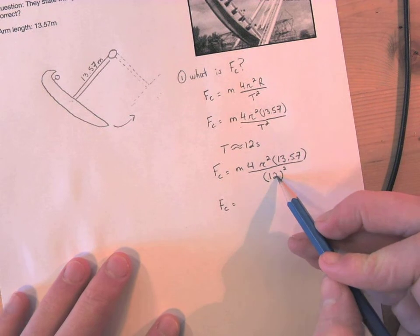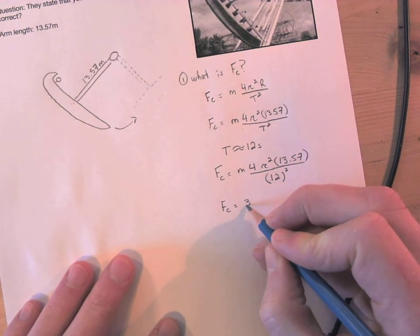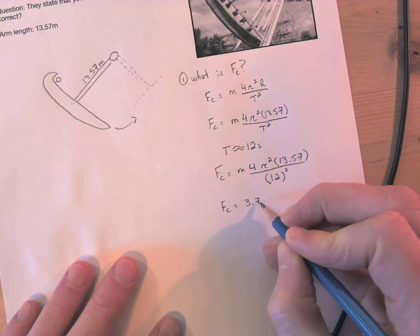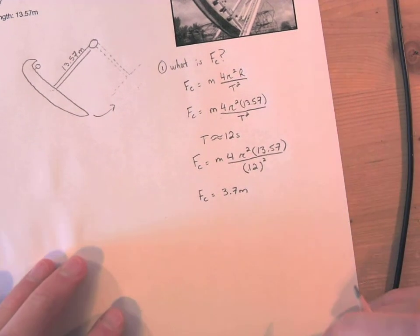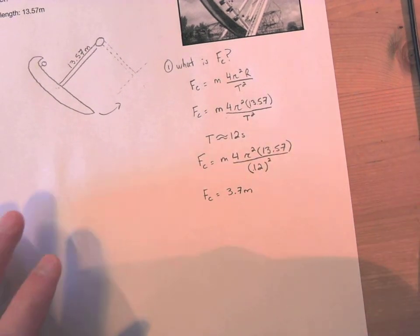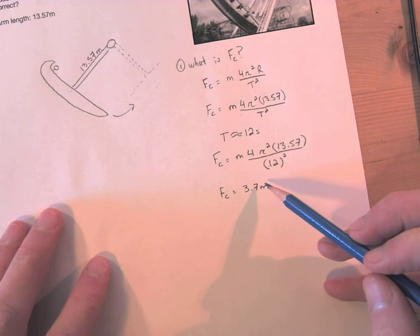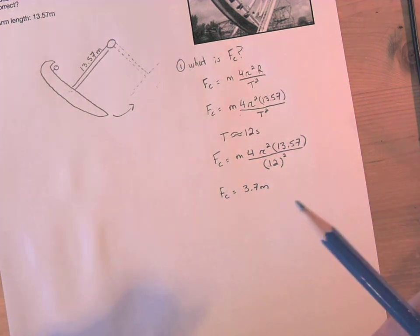Sig figs wise I only have two there, so my answer must have only two. So when I calculate it, this is what I got: 3.7m. So I got 3.7 times your mass is the centripetal force that you would feel.